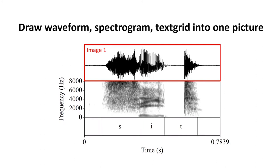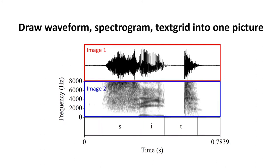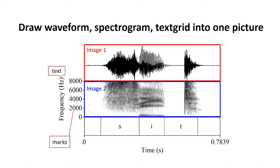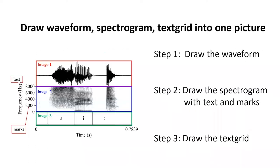First, Pratt needs to draw image 1, the waveform. Then it needs to draw image 2, the spectrogram, with some text and marks. Lastly, it needs to draw image 3, the text grid. Let's do this in three steps: first, we draw the waveform; second, the spectrogram with text and marks; and third, the text grid.